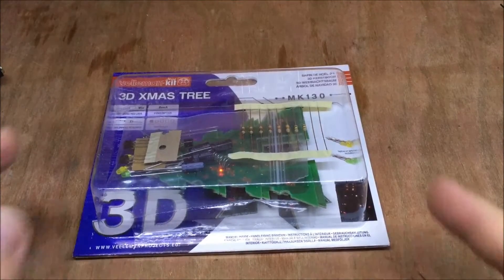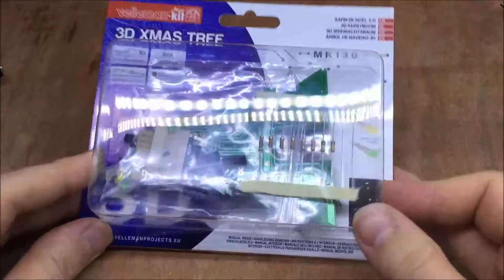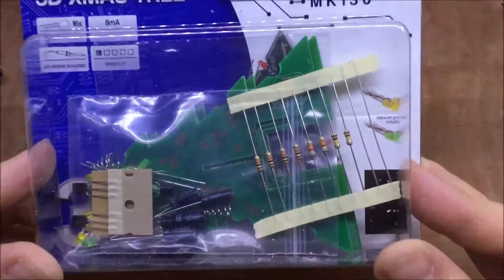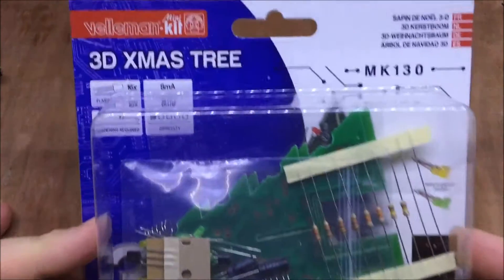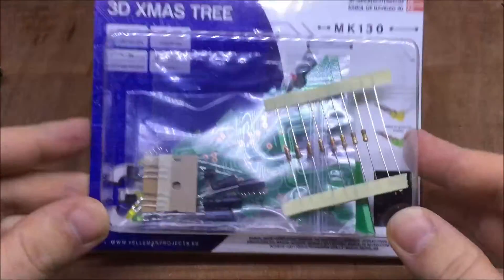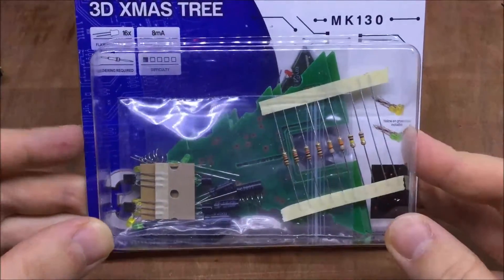Christmas is fast approaching and the solar shed needs some decoration. So I've been out and I've got this, a 3D Christmas tree, a Velman mini kit from good old Maplin. Let's see what's inside.